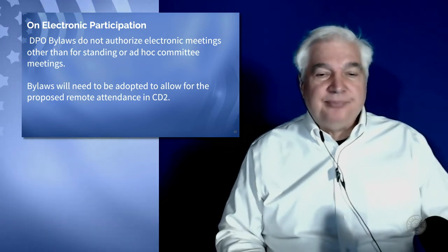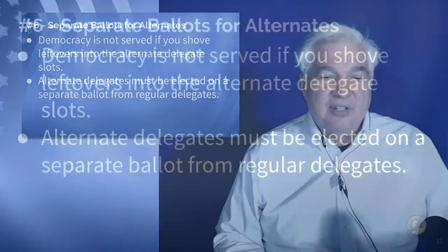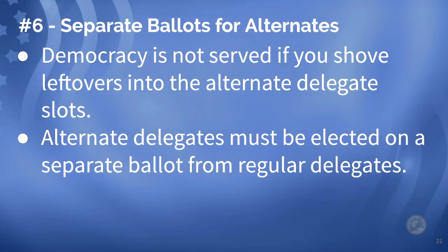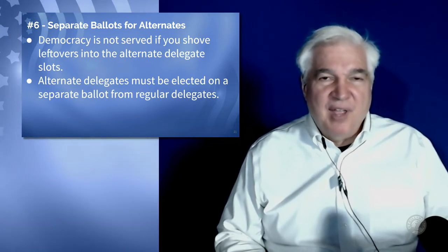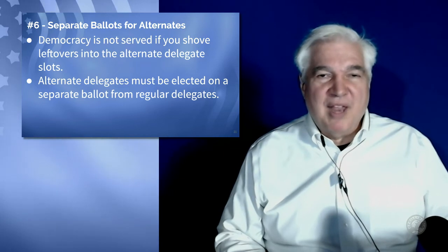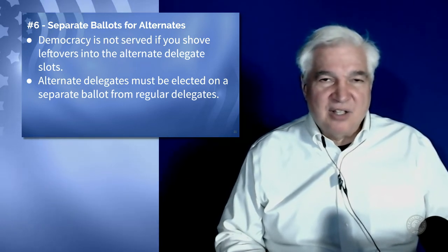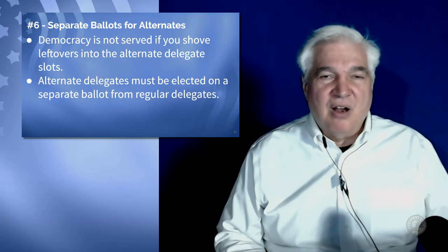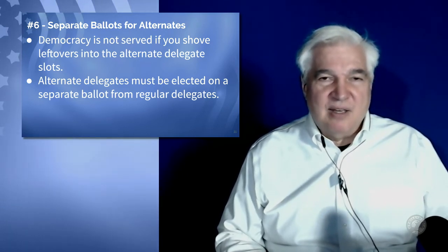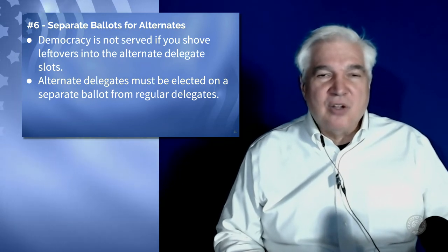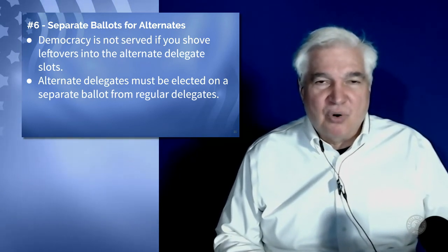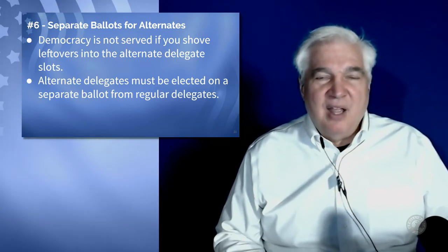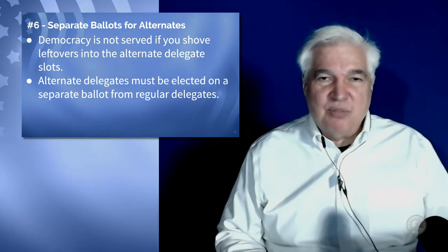Finally, number six: separate ballots for alternates. Democracy is not served if you shove the leftovers into an alternate delegate slot. We've had a practice of doing that, and we've started to change that this year. Balloting with everyone on one ballot versus electing alternates on two separate ballots can produce quite different results. This goes back to the concept of majority rule in democracy — a majority has to pick the delegates unless you have a special rule that says otherwise.